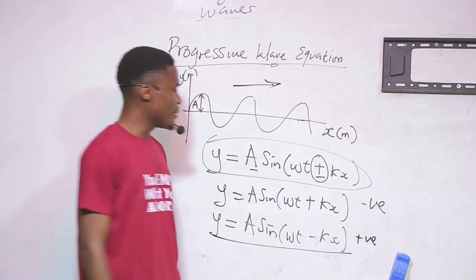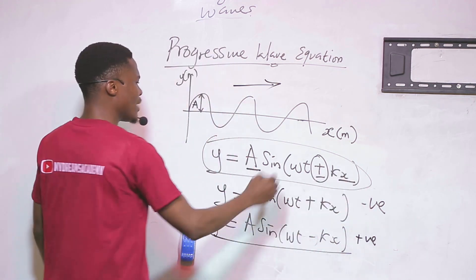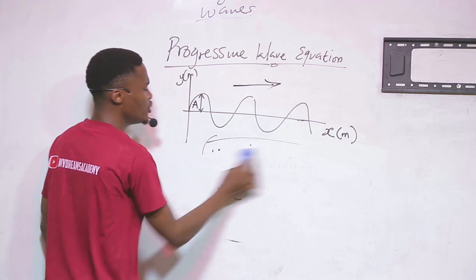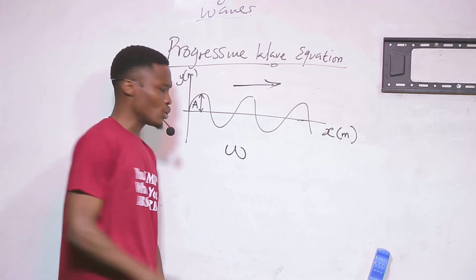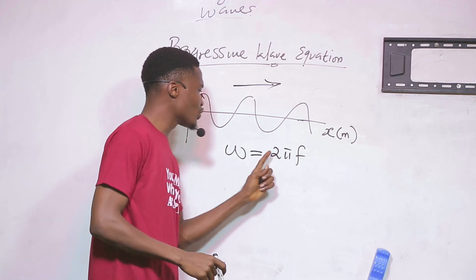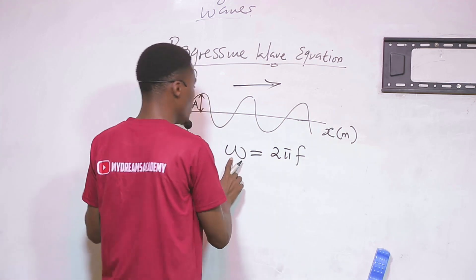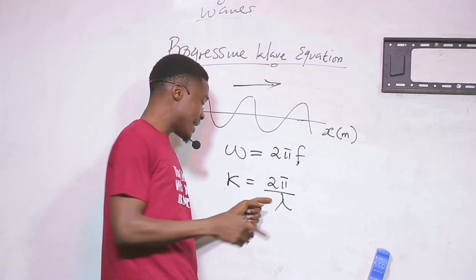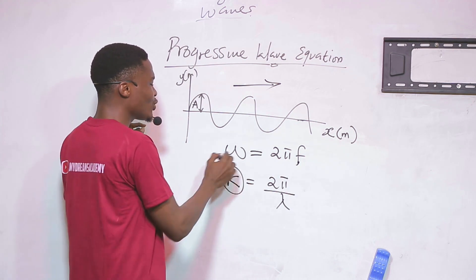Now we know what amplitude, x, and y are. The remaining terms are omega (ω) and k. Omega has the formula ω = 2πf, where f is frequency. K is equal to 2π over lambda, where lambda is the wavelength. So ω = 2πf and k = 2π/λ.